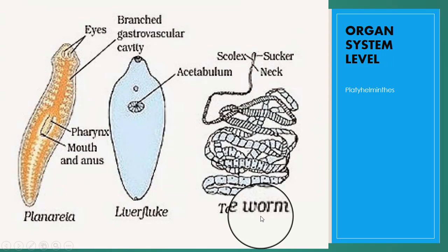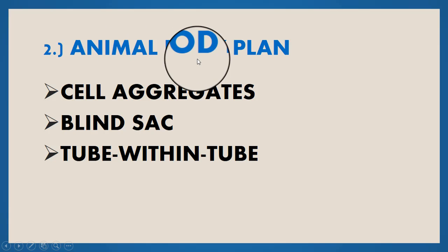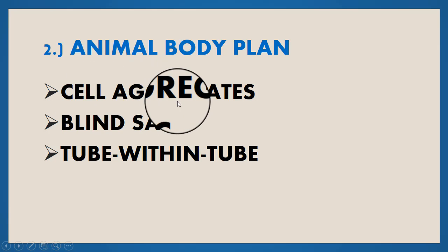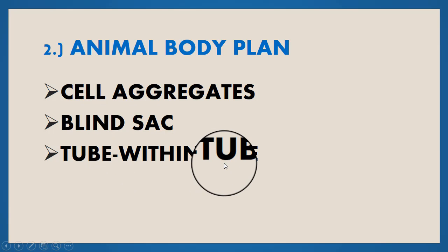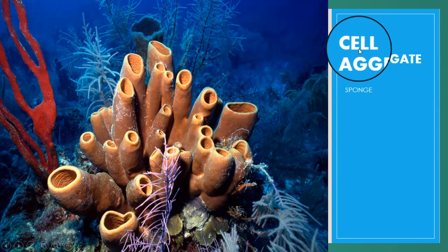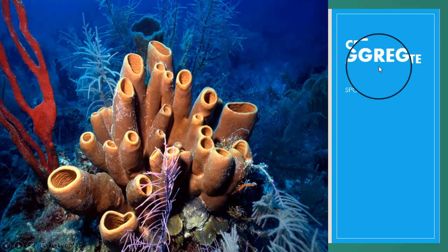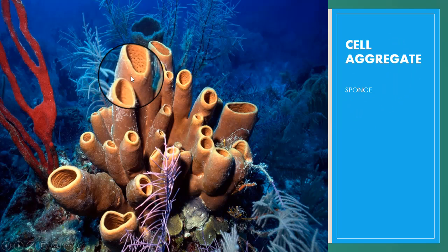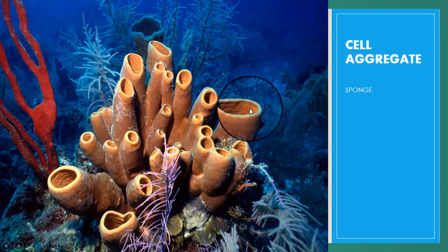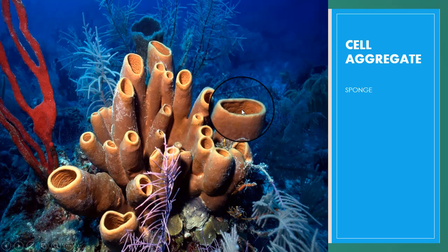The next basic point is animal body plan, which is divided into three types: cell aggregates, blind sac, and tube within tube. The cell aggregate body plan is exhibited by sponges, which are protozoans. The cells are loosely aggregated; they have no germ layers, no true tissues or organs, and intracellular digestion.